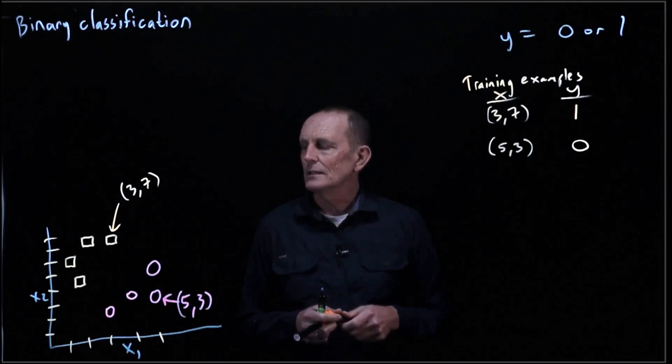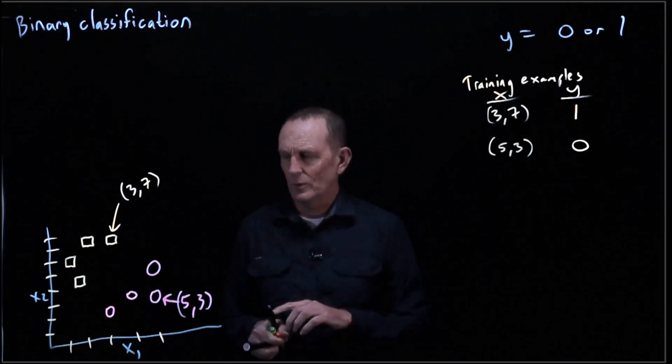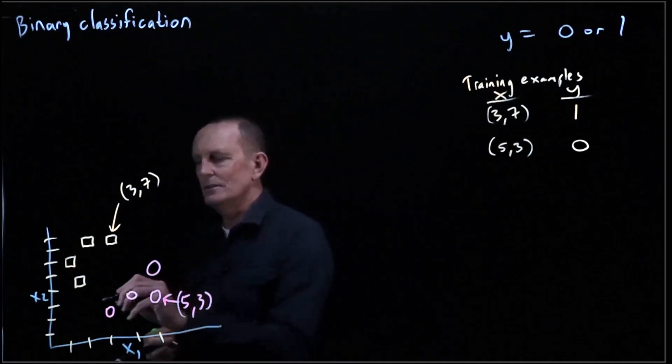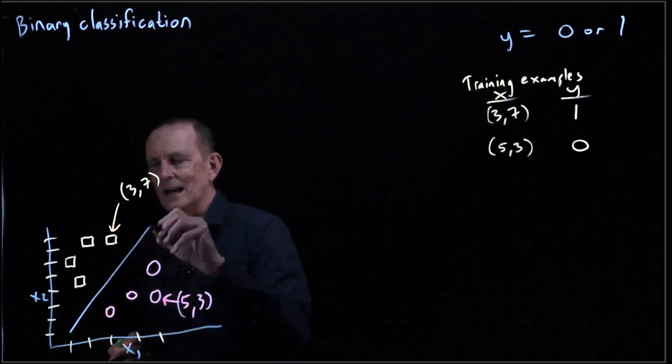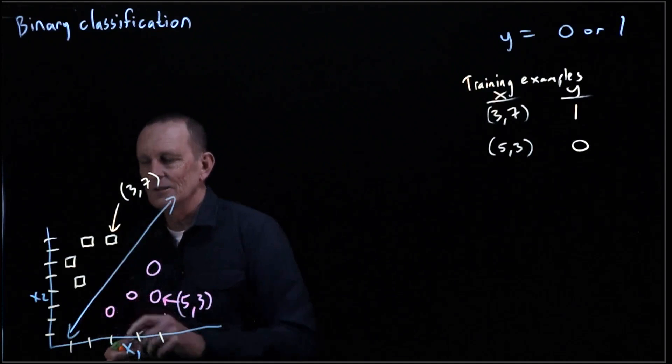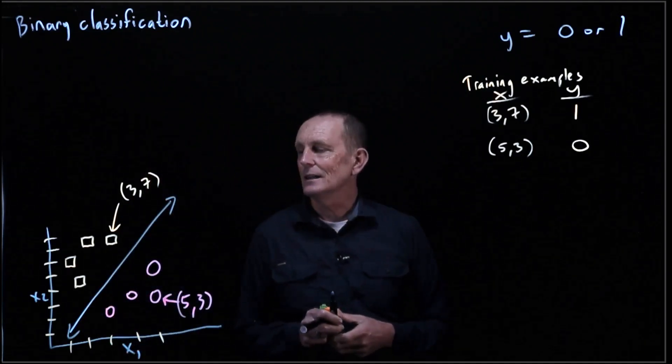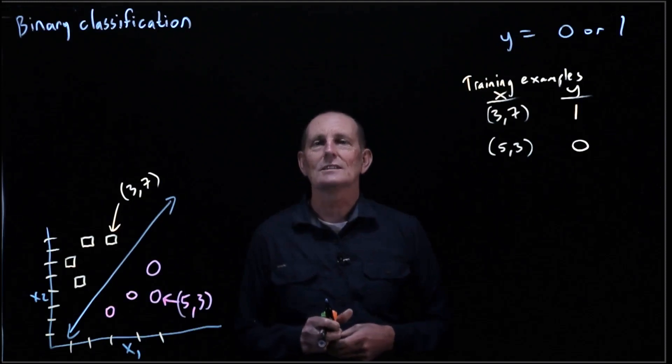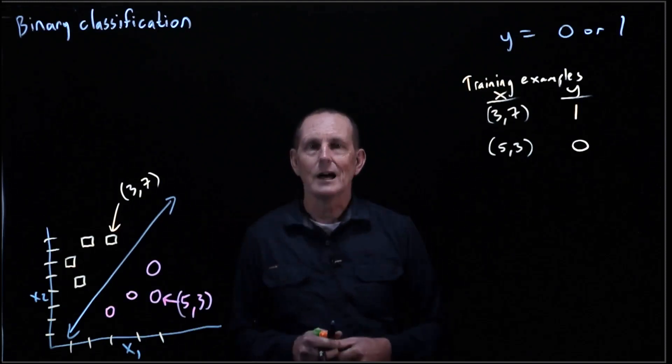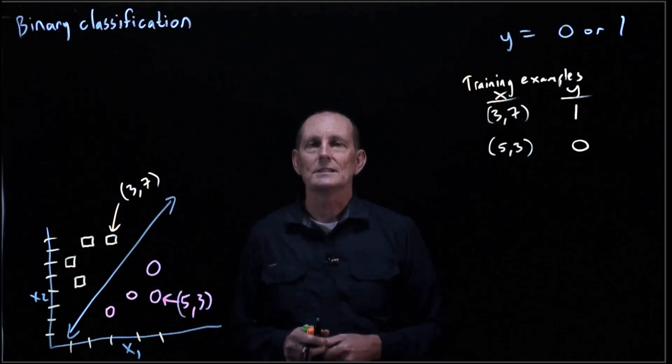So the question is, we're going to use a linear classifier. So we could do something like, let's say, this line. If we've got something that is above the line, then we'll say it's a square. And if it's below the line, then we'll say it's a circle.